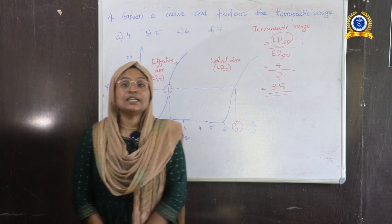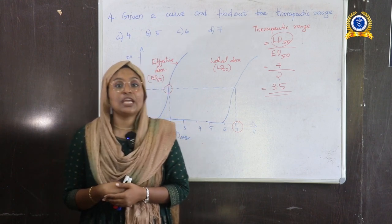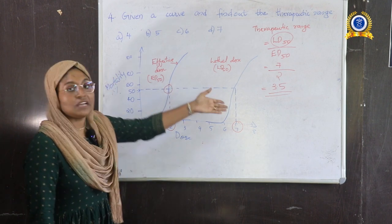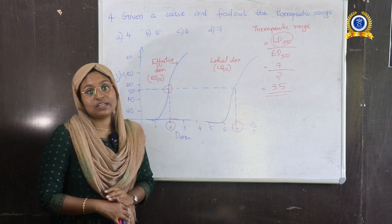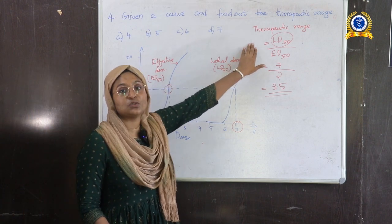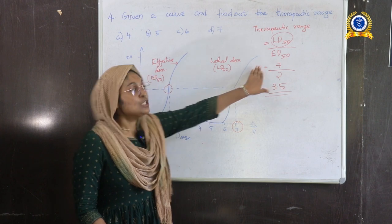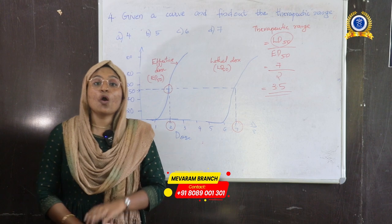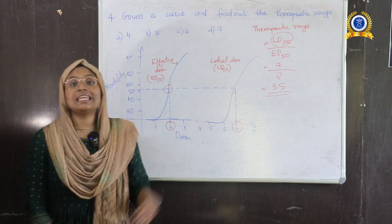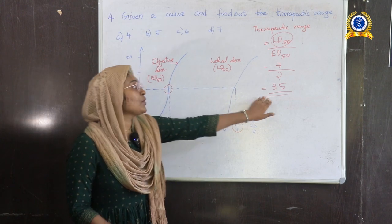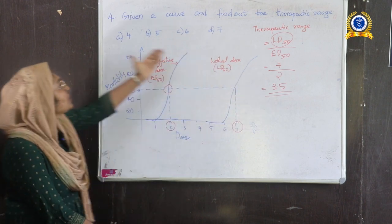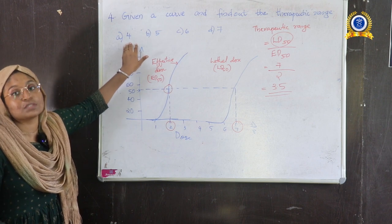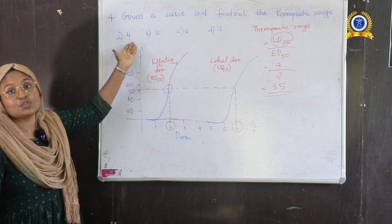Therapeutic range is the ratio of LD50 to ED50. LD50 is the least amount of drug causing death; ED50 is the least amount that has an effect in patients. The calculated value is 3.5, and the nearest option is 4, so the answer is Option A.